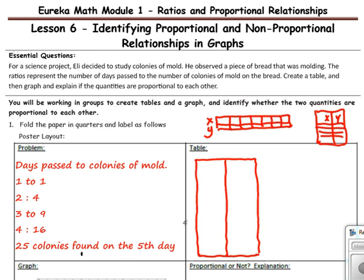And keeping track of the days passed and the colonies of mold. We know that x is our independent variable and y is our dependent variable. And our mold is dependent on how many days growth were allowed. So y is going to be the mold and x is the number of days.